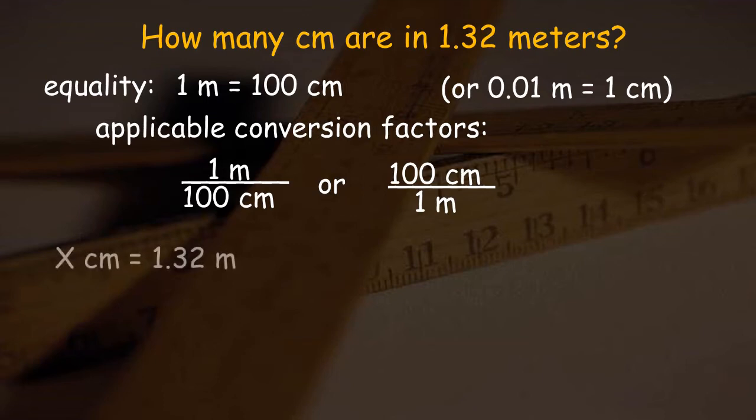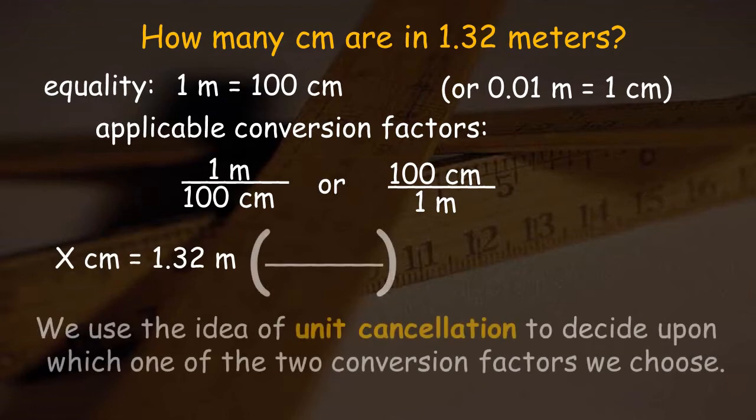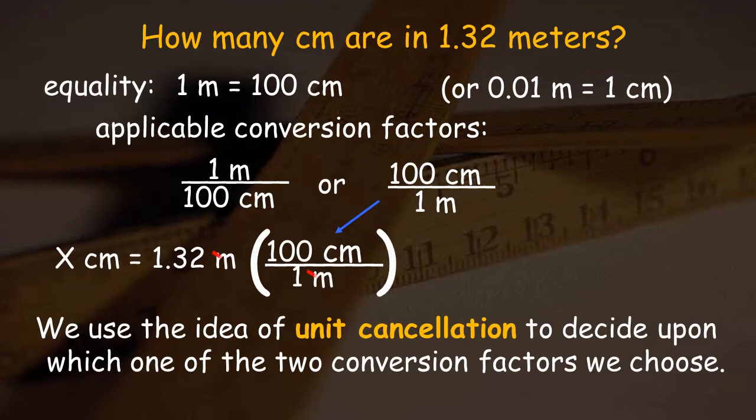We use the idea of unit cancellation to decide upon which one of the two conversion factors we choose. In here, it allows us to cancel both units of meter, and we are left with our desired unit, the centimeter.